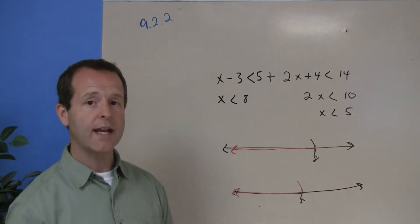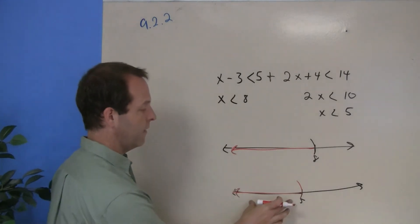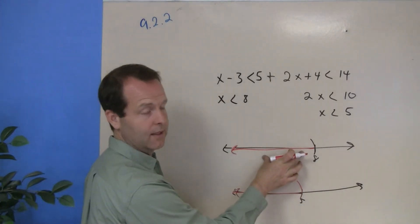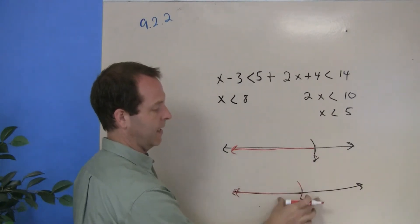It appears that if I overlaid both of these graphs on top of each other, this graph has all values less than 5, so does this one. But this graph does not contain all values less than 8.